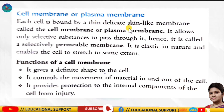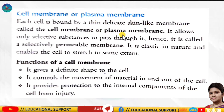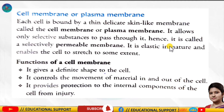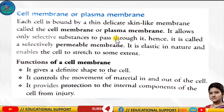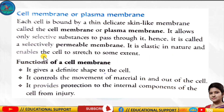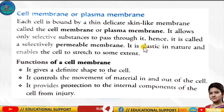The cell membrane allows only selective substances to pass through it; hence it is called a selectively permeable membrane. Please underline this and remember it. It is also elastic in nature and enables the cell to stretch to some extent.